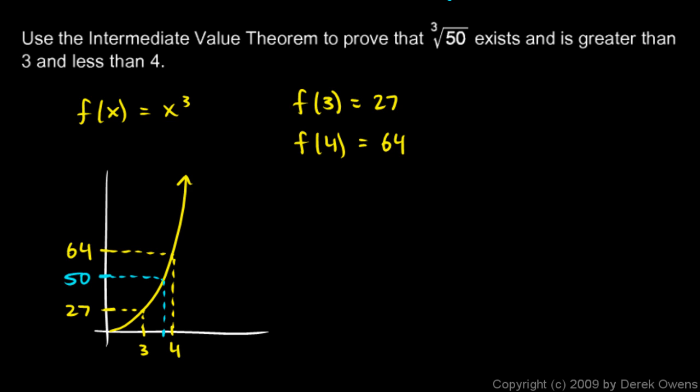So f of 3 is 27, f of 4 is 64. This function is continuous. We know that. And that's worth stating,